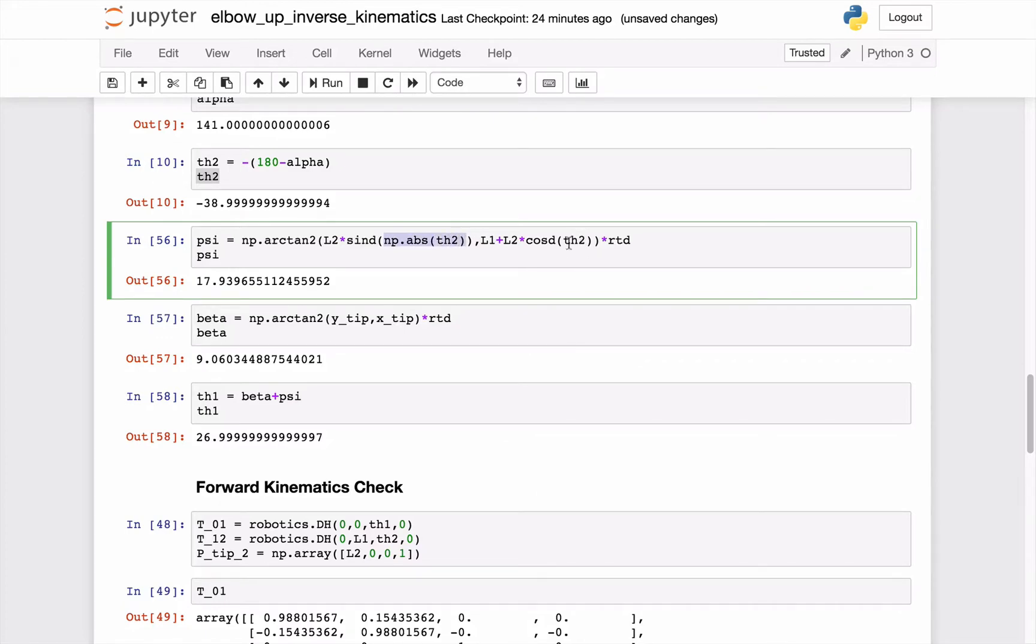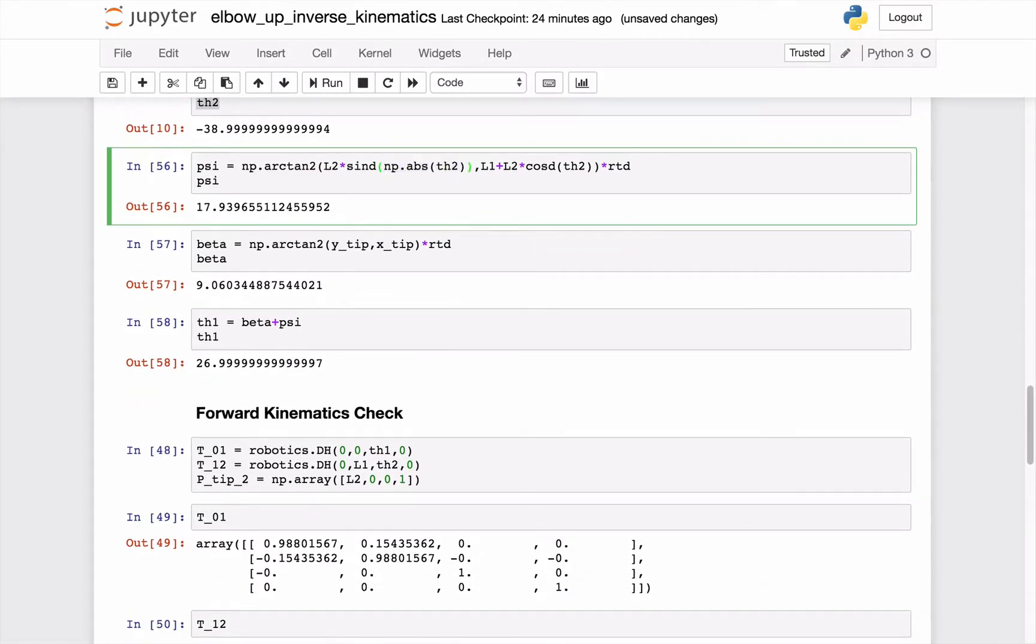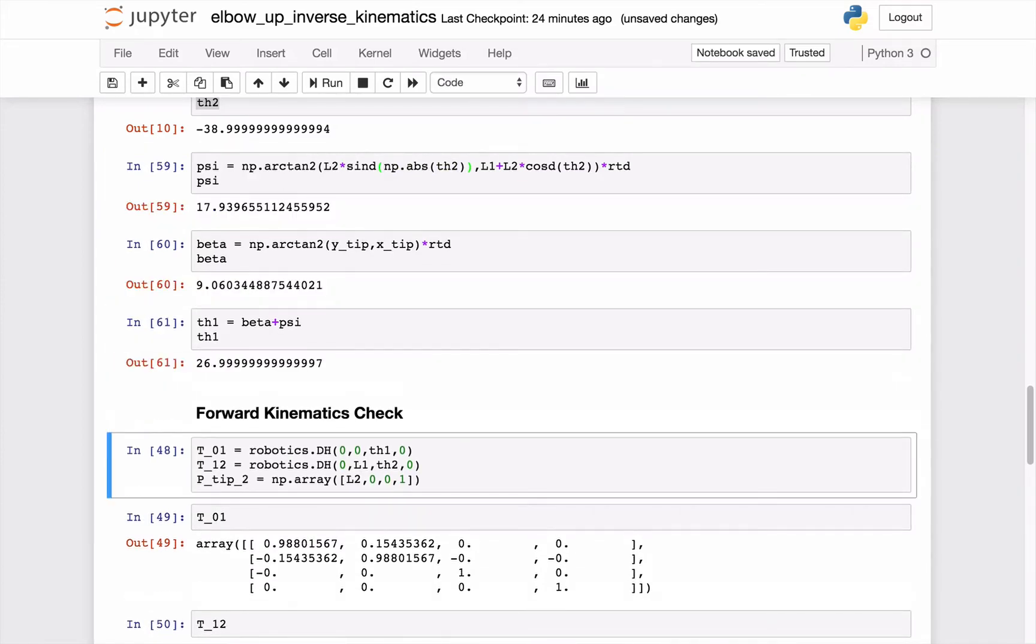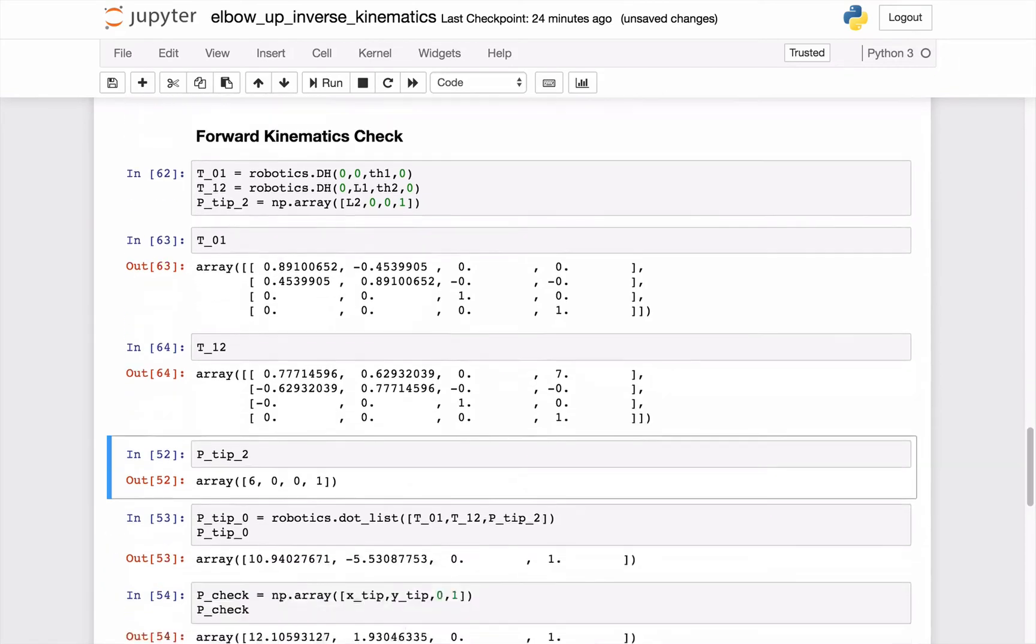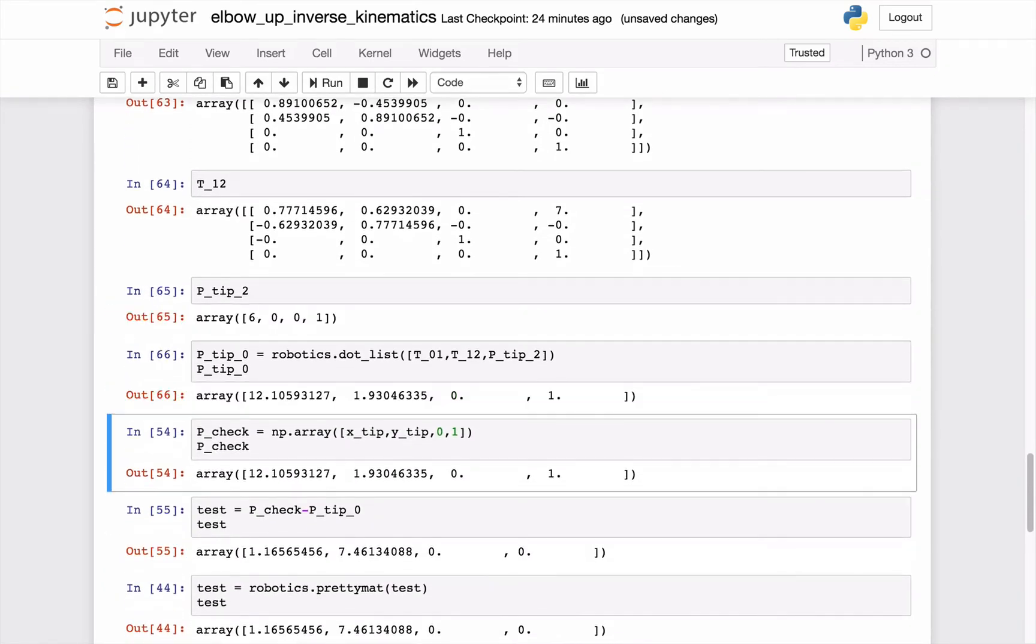That then will lead to psi being positive. And in fact, psi being the same value we had in the elbow-down solution. I guess I didn't work through that numerically, theta won't change. And then when I add them, I'll get a positive 27 on theta-1, which was, in fact, the angle that we kind of made up. So it's a long explanation of all we really need to do is make sure this is an absolute value. Now, I could also add an absolute value here, but cosine doesn't really care about the sign of its input angle. So then having theta-1 and theta-2, I can go back and redo my forward kinematics check.